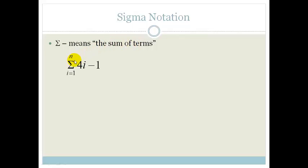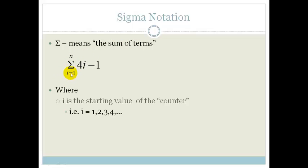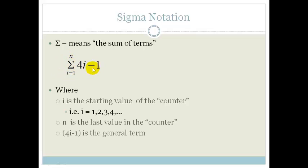So your normal sigma notation would be written where your i is your starting value of a counter, n is your final value, and 4i minus 1 is your general term. The way we'd read this is: the sum of 4i minus 1, from i equals 1 to n.